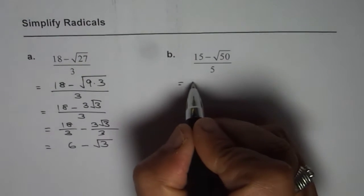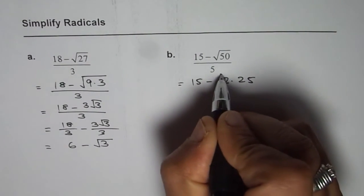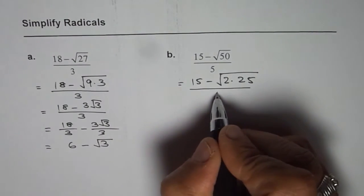The other one, let's do it. Strategy is same. 50 to be written as 2 times 25. Why? 25 is a perfect square.